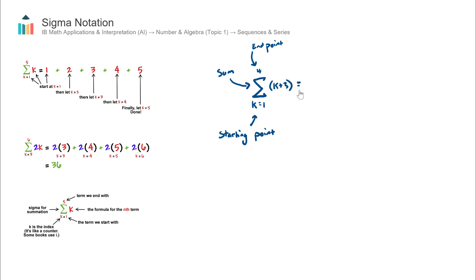The first term, we're going to substitute in k equals 1, so it's going to be 1 plus 3. Again, sigma means sum, so we're going to add the next term in the sequence. We go up by whole numbers, so it's going to be 2 plus 3, that's a k value of 2, plus 3 plus 3, that's k equals 3, plus 4 plus 3, that's k equals 4.